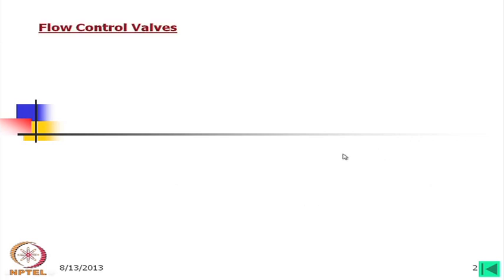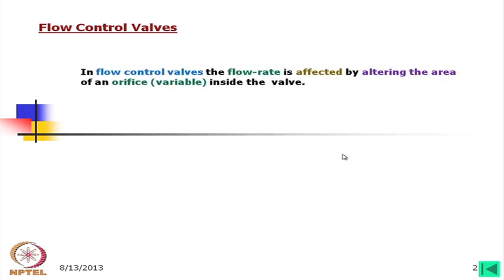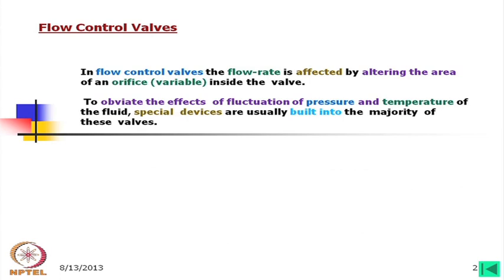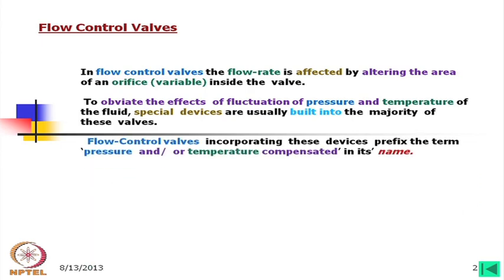We shall discuss about flow control valves. In flow control valves, the flow rate is affected by altering the area of an orifice inside the valve. The orifice is variable. To obviate the effects of fluctuation of pressure and temperature of the fluid, special devices are usually built into the majority of these valves. Flow control valves incorporating these devices prefix the term 'pressure and/or temperature compensated' in their name.